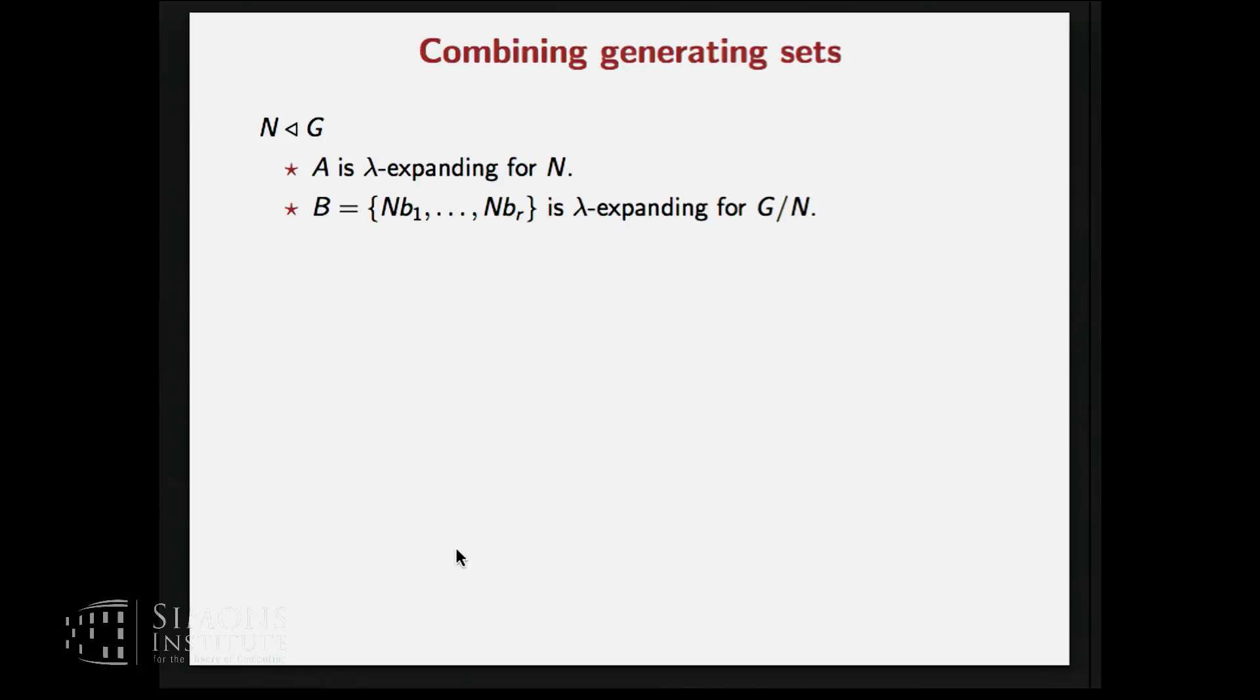So now the problem of finding an expanding generating set boils down to finding an expanding generating set for these two and then for combining them. So we will see each of these steps. So let's just see one step. So let's say N is a normal subgroup of G. If A is an expanding generating set for N and B is an expanding generating set for G/N, then is it enough to just take a union of this A and B to get an expanding generating set for the original group G?